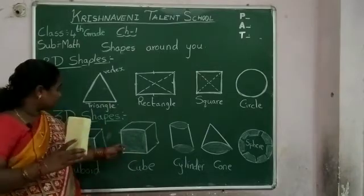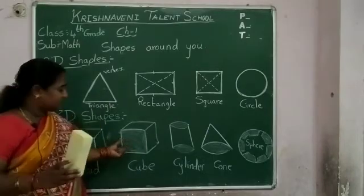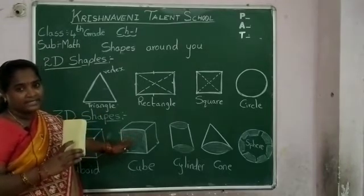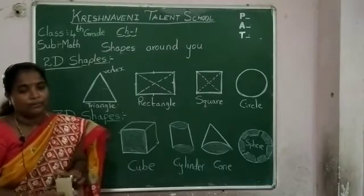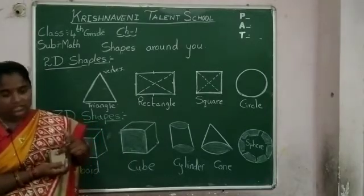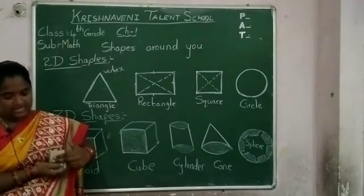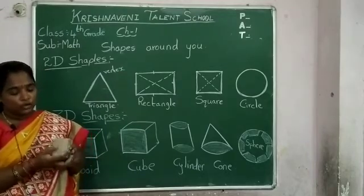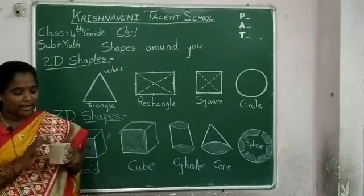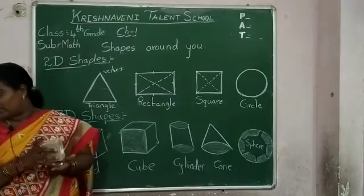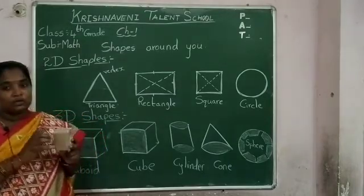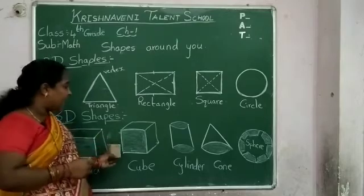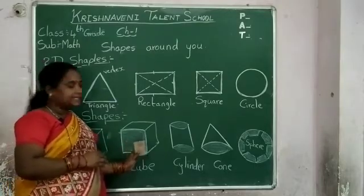Next, the shape is cube. What is a cube? A cube also looks like a rectangle — it has square faces. See, it is an example of a cube. Cube looks like a square — it has six square faces, twelve edges, and eight vertices. Every cube has six square faces, twelve edges, and eight vertices.